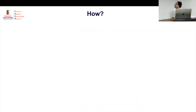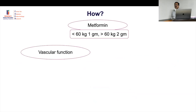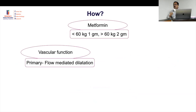They gave metformin 1 gram for those under 60 kg and 2 grams for those over 60 kg — a reasonable dose selection. The primary outcome was vascular function, specifically flow-mediated dilatation. This is a marker of vascular compliance. Whether these vascular function markers truly correlate with cardiovascular outcomes is the critical question.